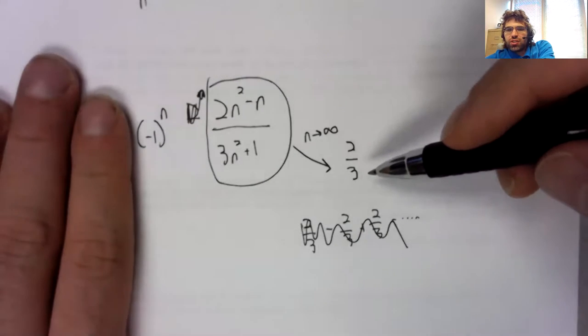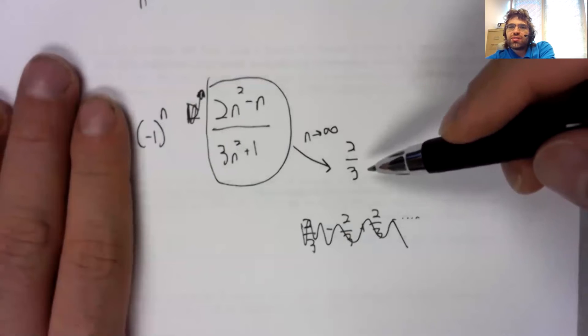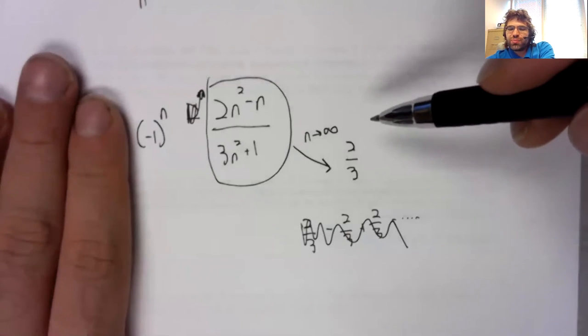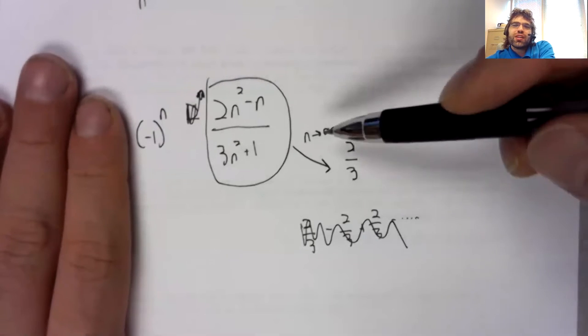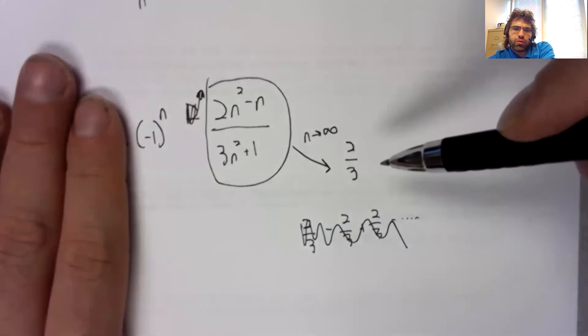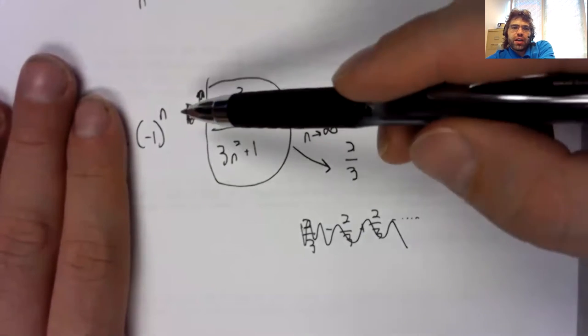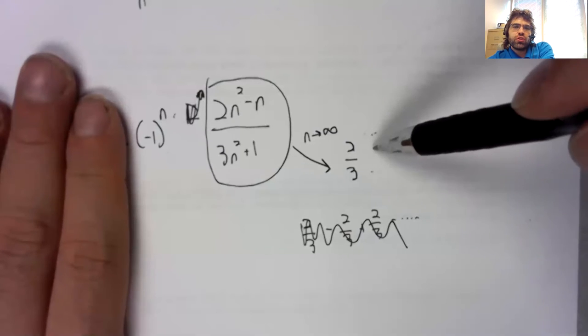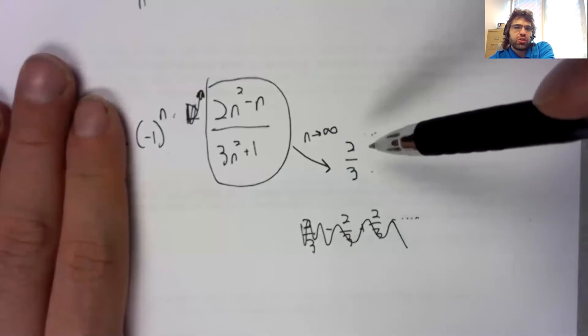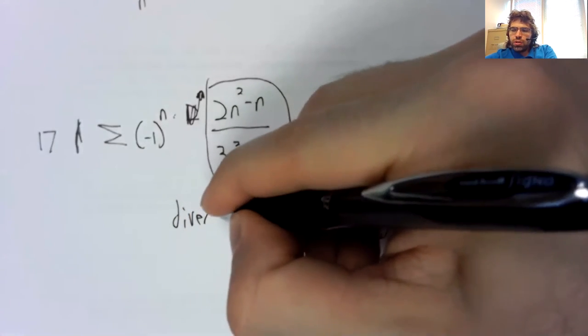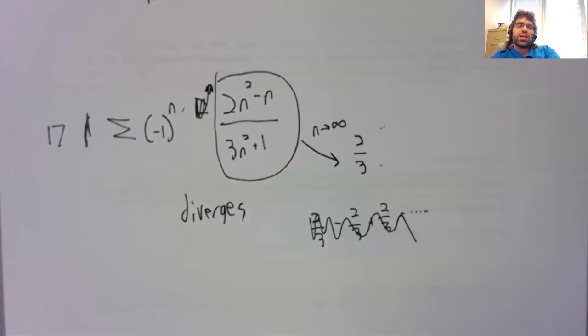sorry, this problem is causing me to misspeak. I don't know why. If the limit isn't going to zero, we have divergence. And as n increases, these terms are flipping between being close to two thirds and close to negative two thirds. But they're not going to zero. So this thing diverges.